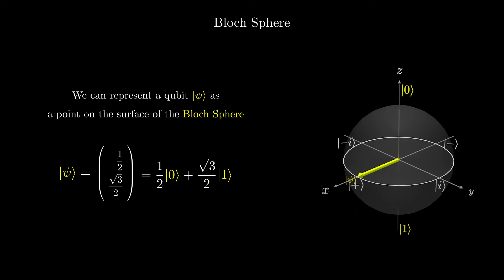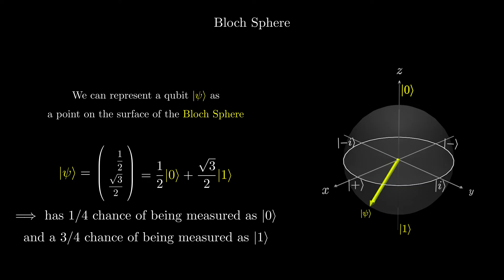The qubit 1/2, √3/2 would be halfway between the equator and the one state, since it has a 1/4 chance of being measured as a zero and a 3/4 chance of being measured as a one.